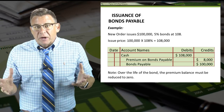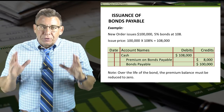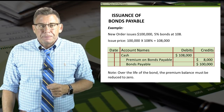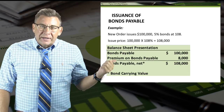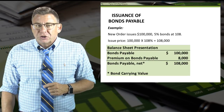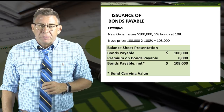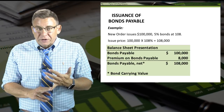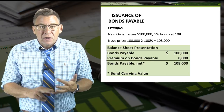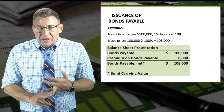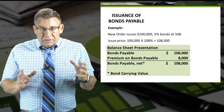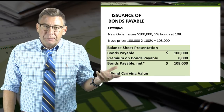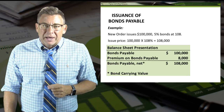Then over the life of the bond, the premium balance would be reduced to zero. Looking at the balance sheet presentation after issuance: bonds payable is $100,000, and the premium on bonds payable is $8,000. This adds to the bond carrying value because premiums have credit balances.